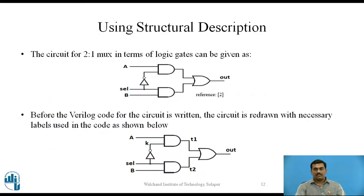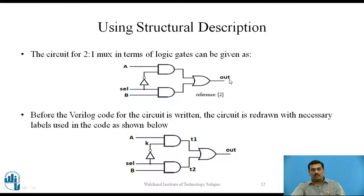Now let us describe the same circuit using the Structural description approach. We first need to draw the circuit diagram in terms of logic gates. A, B, and SELECT are the inputs. We require two AND gates, one OR gate, and one NOT gate. The NOT gate has input from the SELECT line and its output is connected to the first AND gate. The other input to the first AND gate is A. Its output goes to the OR gate. The second AND gate has inputs SELECT and B, and its output also goes to the OR gate, which produces OUT. Before writing the Verilog code, the circuit is redrawn with necessary labels.